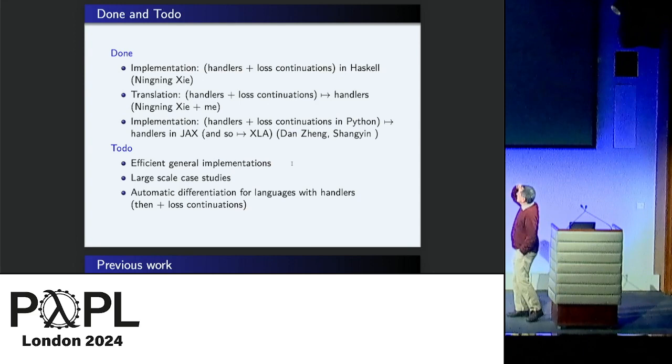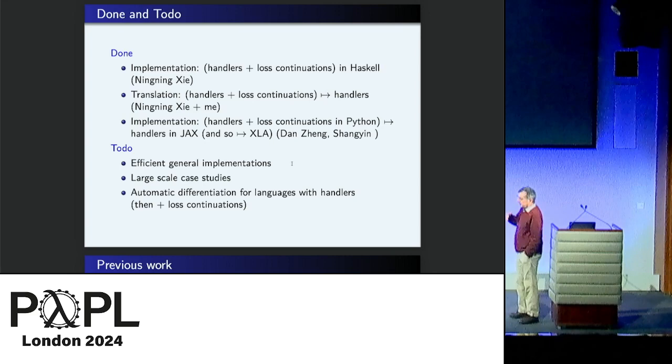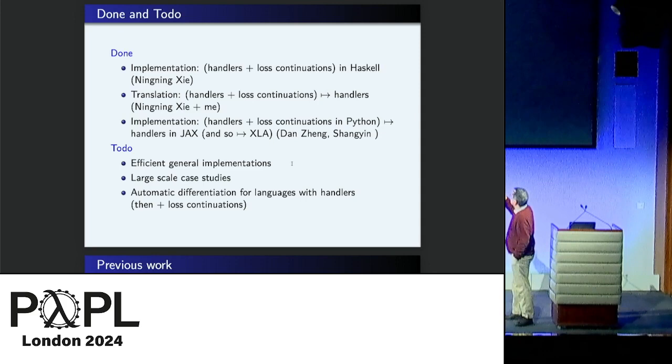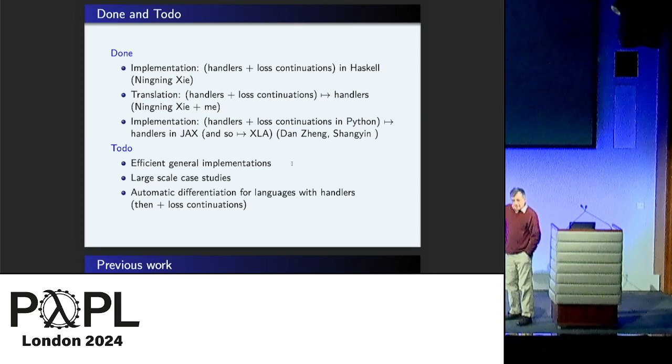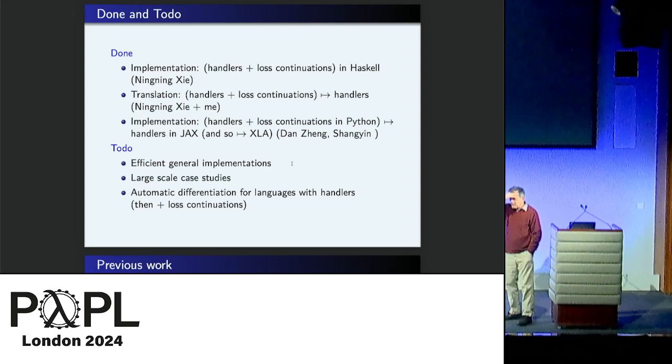What have we done? Ningning, I've written an implementation in Haskell. We've got a translation from handlers and loss continuations to handlers without loss continuations. And it would be nice to be serious. So beginning to be serious with Dan and Xiangying who are doing implementations in Google's JAX and so to XLA and so to hardware. And in the examples they did, they claimed, I'm sure their claim is correct, they only got a 10% loss in efficiency over a standard implementation.